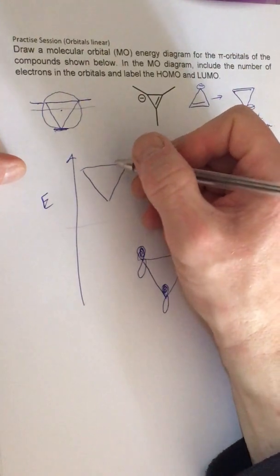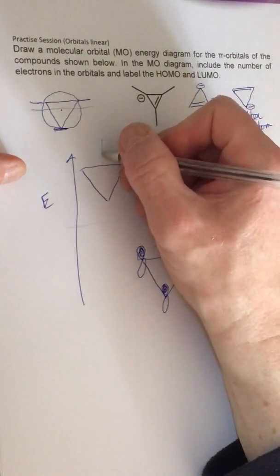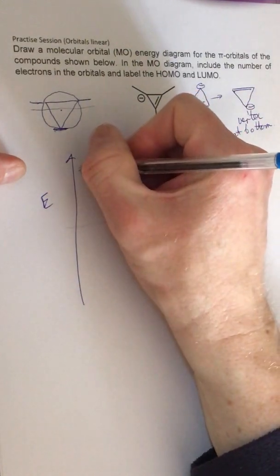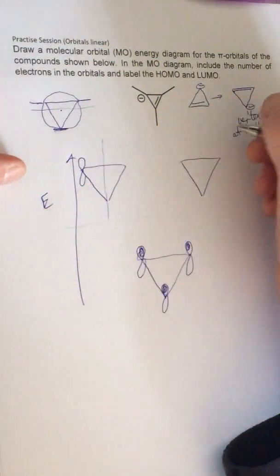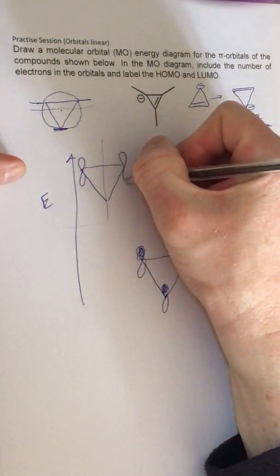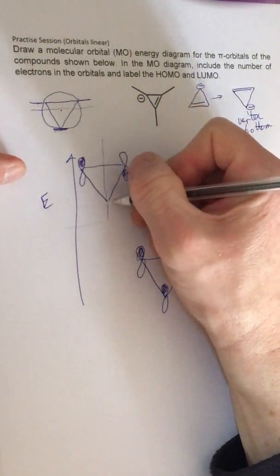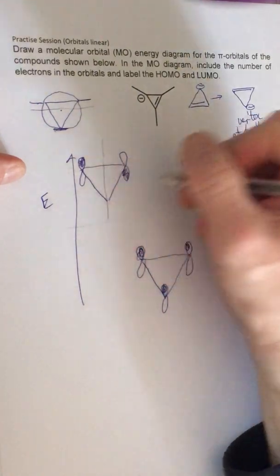And the one at the top has one node, so we have a simple one going through there. Then we can draw an orbital—there's an anti-bonding interaction there. So that's up, that's down, and because there's a node going through here, there's no p orbital electron density there.